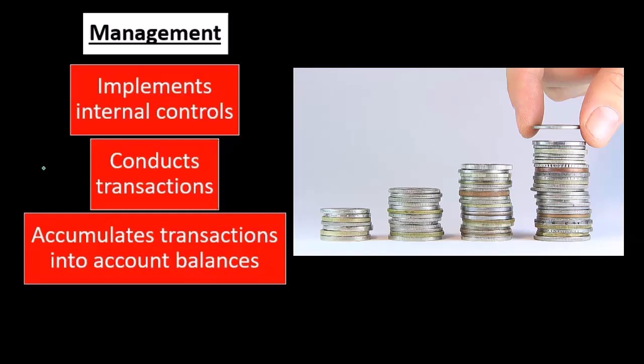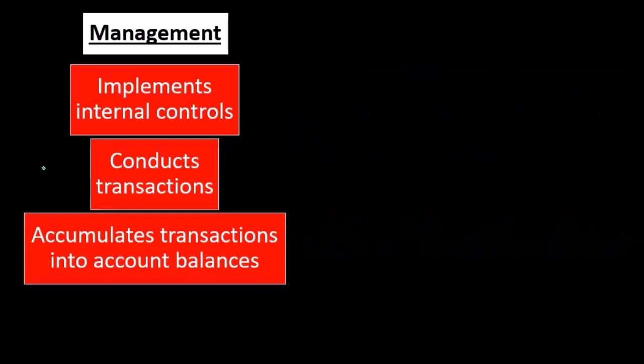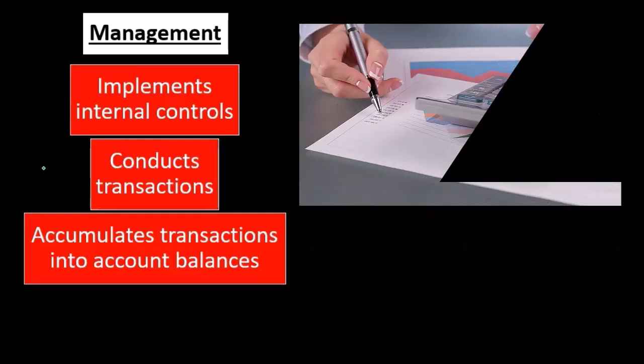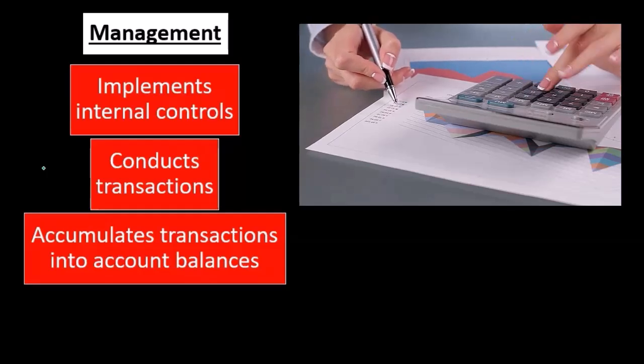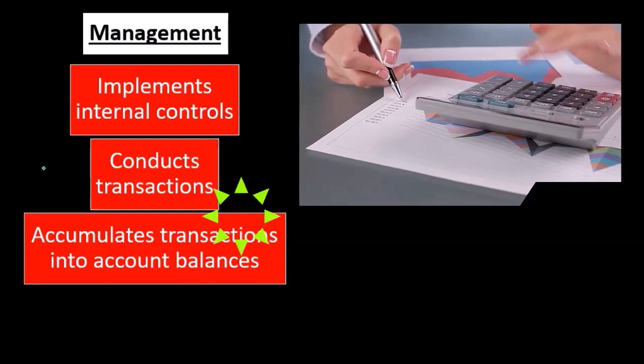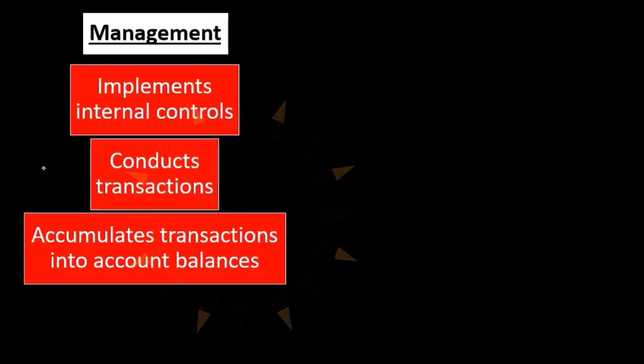Management will accumulate transactions into account balances. We can imagine this is what the company is doing—this is general ledger accounting. The management is responsible for taking those transactions and compiling them into balances, say a trial balance. We can imagine the trial balance being put together.